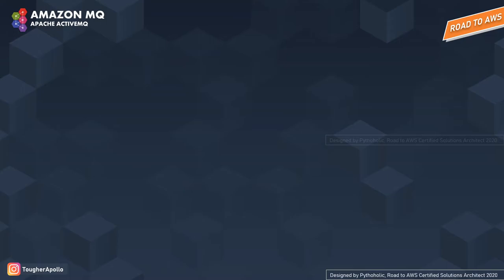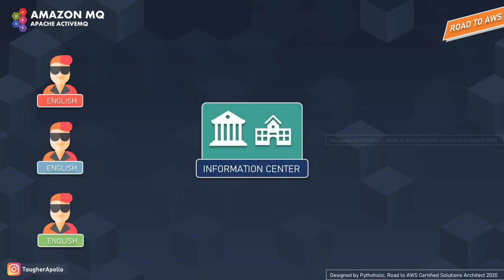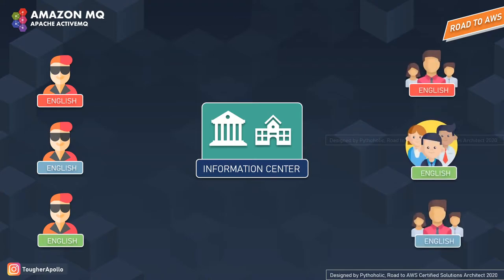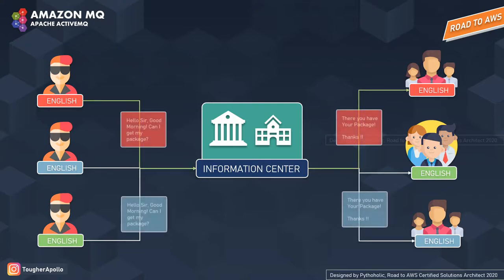I won't talk in technical terms. Let's start off with a simple story-based visualization, and by the end of the story, you will have a clear idea of what message brokers are. There are three people who went to an information center to get some information. For that, there are several divisions of people at the center who are here to help these individuals. Here we have three users who went to the information center and they are seeking some advice or information.